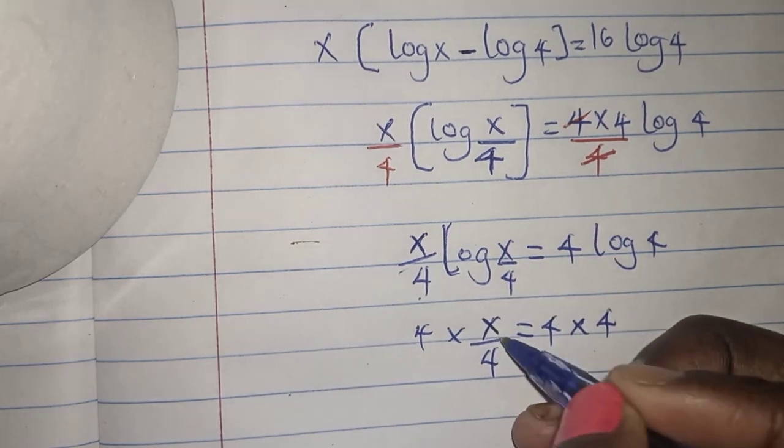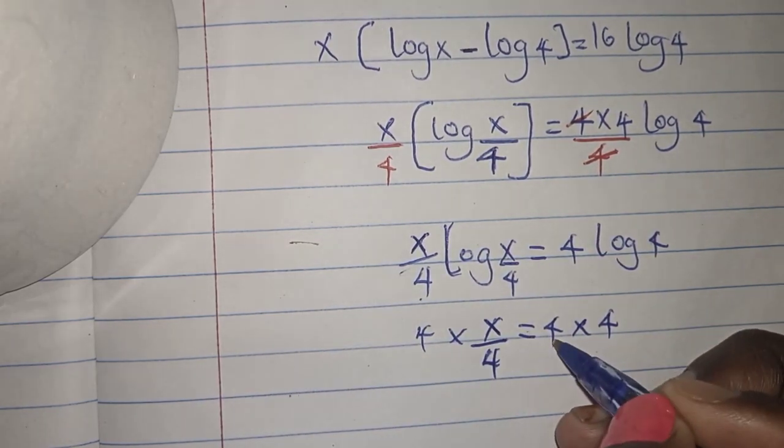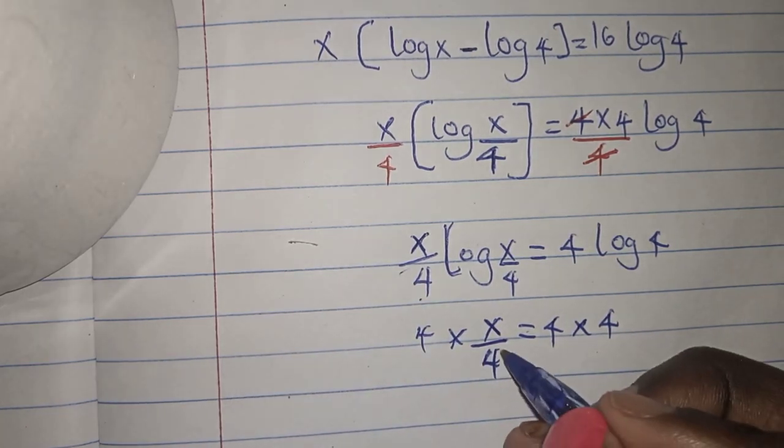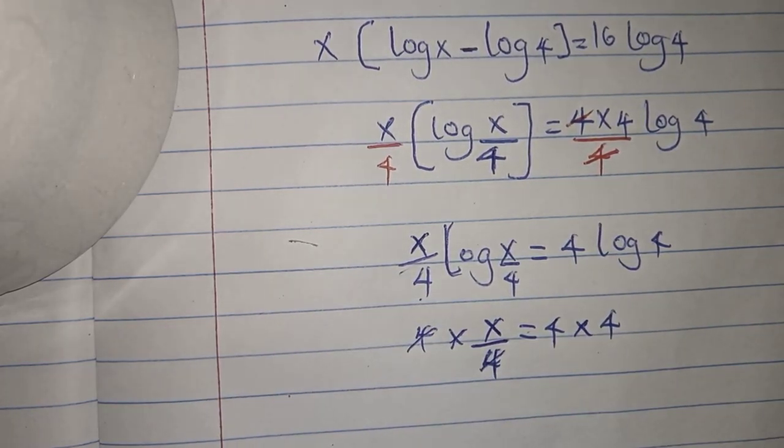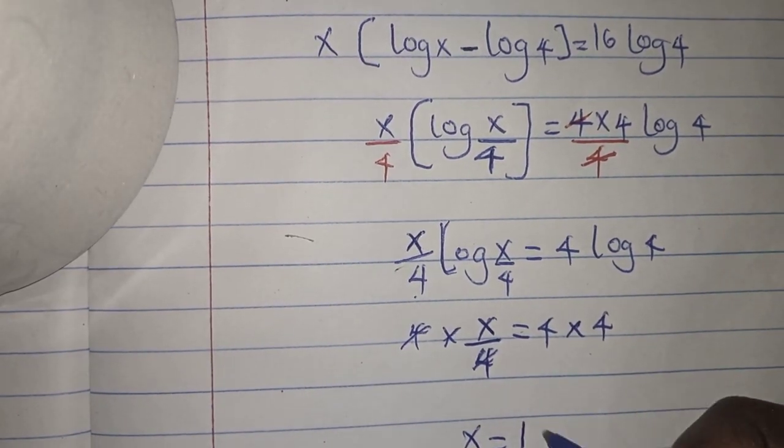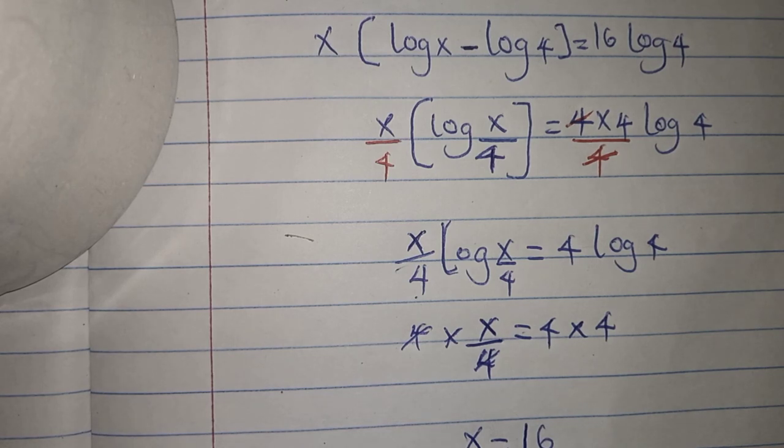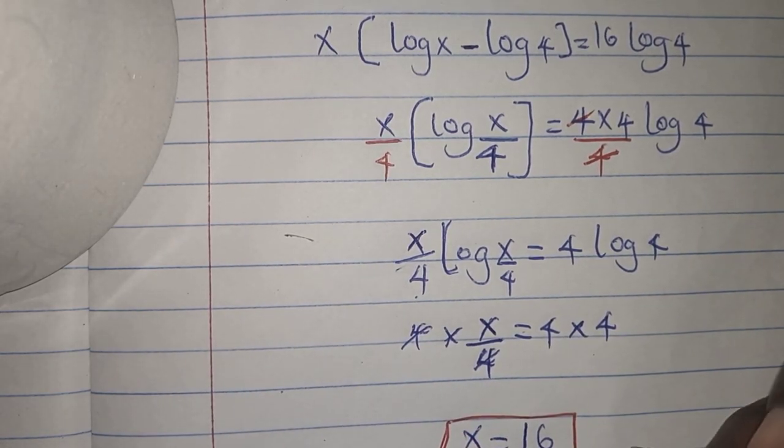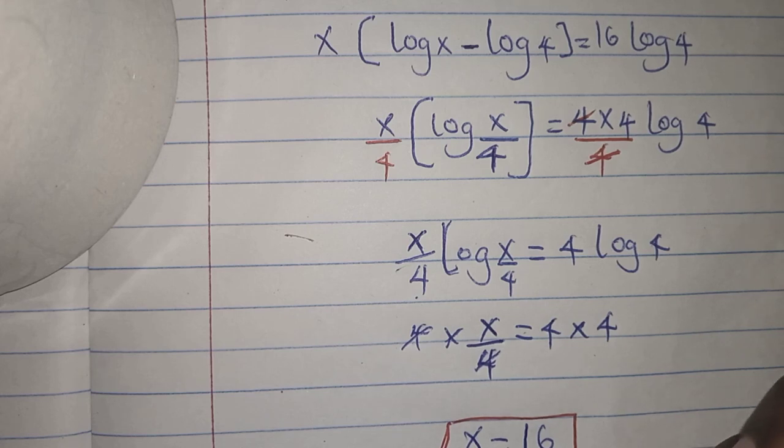So x divided by 4 is equals to 4. I've multiplied both sides by 4, this side and this side. So this and this will cancel. Those 4 will cancel. And x is equals to 4 times 4 is 16. And this is the solution to our problem. This was the solution to our question.